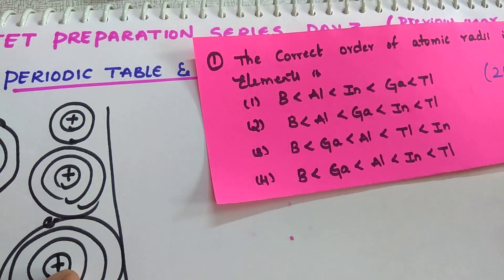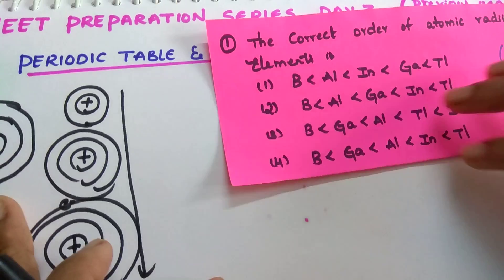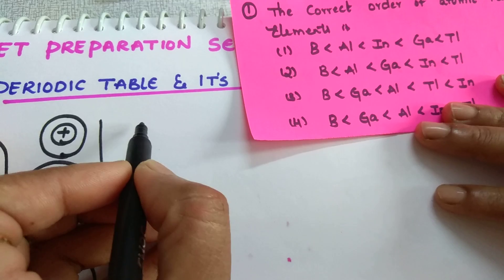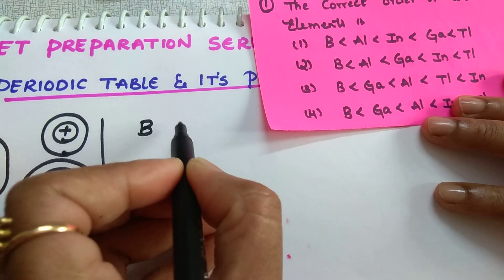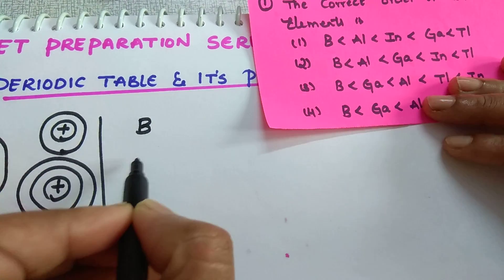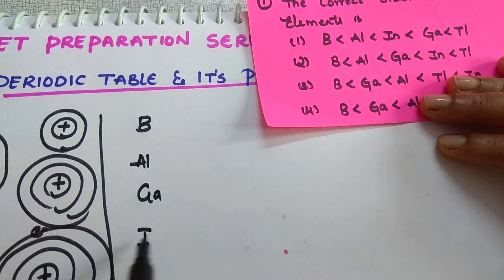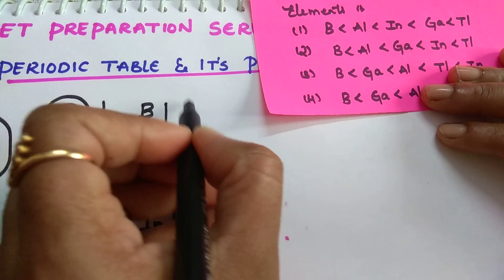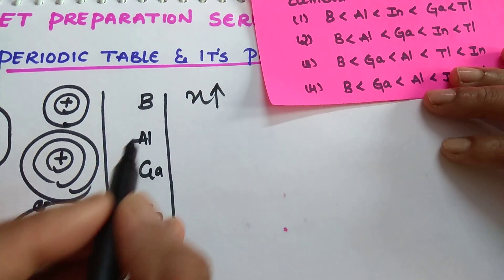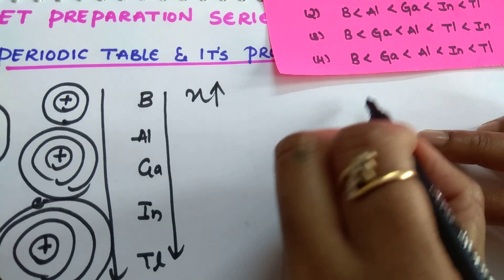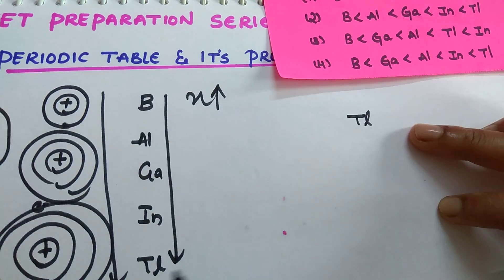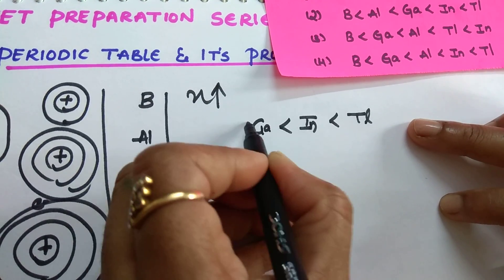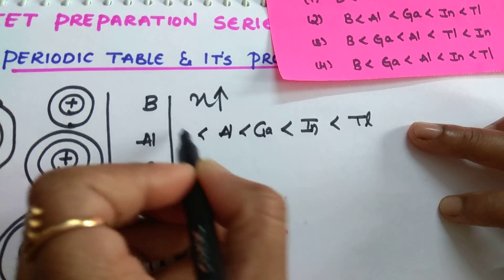I already discussed this in one of the videos, so I am not teaching it slowly. What happens in case of group 13? Boron, aluminium, gallium, indium, thallium - top to bottom, size increases due to increase in number of shells. So the radius order should be: thallium > indium > gallium > aluminium > boron. But there is an exception here.